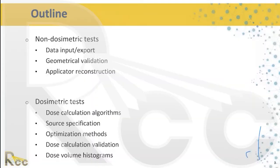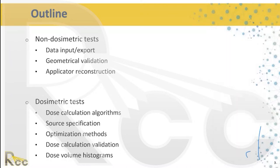We can broadly classify the commissioning process across two categories: non-dosimetric tests and dosimetric tests. Anything not directly affecting the actual dosimetry or modeling is a non-dosimetric test — that includes input and export of data, and geometrical validation. Once done, the important thing is to assess the accuracy of the dose calculation, source specification, optimization methods, and other features of the planning system. Both steps are critically important.